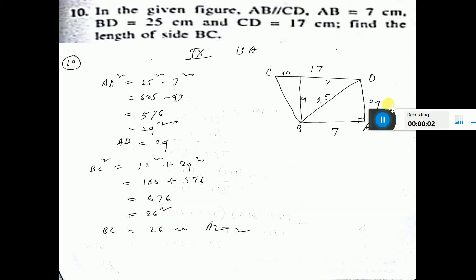Now, question number 10. In the given figure, AB parallel to CD. This is AB parallel to CD. These two are parallel.